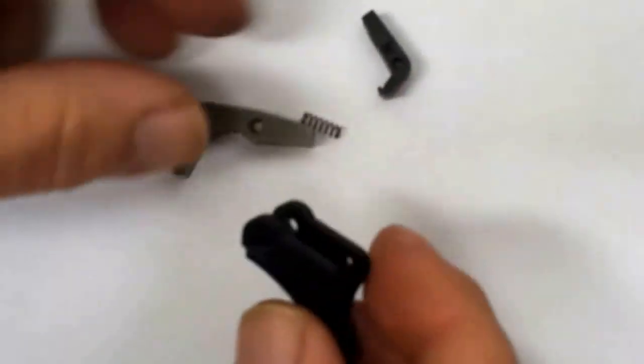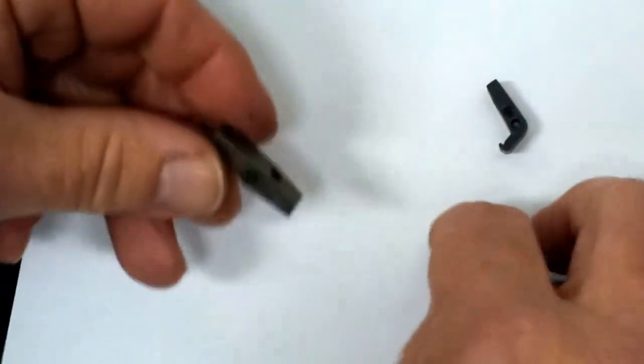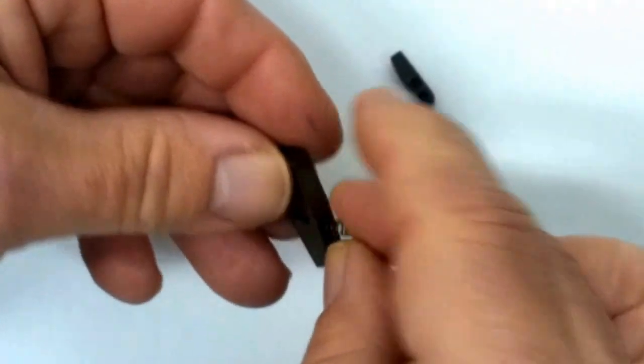One thing that can be a pain when you're putting your trigger group back together is keeping the sear and the disconnector connected when they're in the trigger and you're inserting the trigger assembly into the housing.